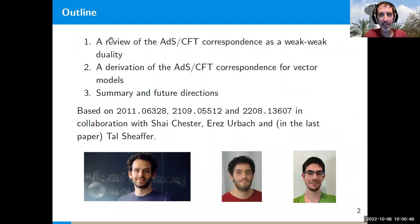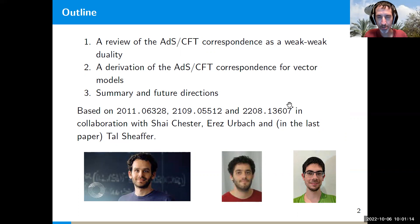I'll start by reviewing the AdS/CFT correspondence, emphasizing an aspect that's usually less emphasized: the fact that there is a limit where both sides are weakly coupled. Using that, we'll attempt to derive the AdS/CFT correspondence for the specific case of the duality of vector models to high-spin gravity. I'll end with a summary and future directions, based on three papers from the last two years in collaboration with former postdoc Shai Chester and two of my students.